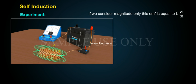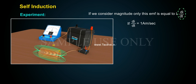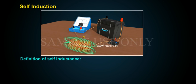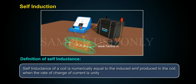If we consider magnitude only, this EMF is equal to L·di/dt. If di/dt equals 1 ampere per second, then EMF equals L. Definition of self-inductance: Self-inductance of a coil is numerically equal to the induced EMF produced in the coil when the rate of change of current is unity.